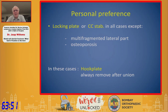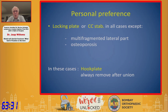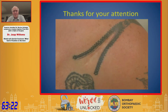My personal preference is the locking plate or CC stabilization, especially for type 2 fractures when feasible. I use the locking plate except in multi-fragmented lateral parts or severe osteoporosis — in those cases I use a hook plate, but I use them rarely. The locking plate or CC stabilization with a dog bone is quite convenient. This is a picture of a patient who had been treated four times earlier for his lateral clavicle problem, and before coming to me he had a very nice tattoo about it. Thank you very much for your attention.